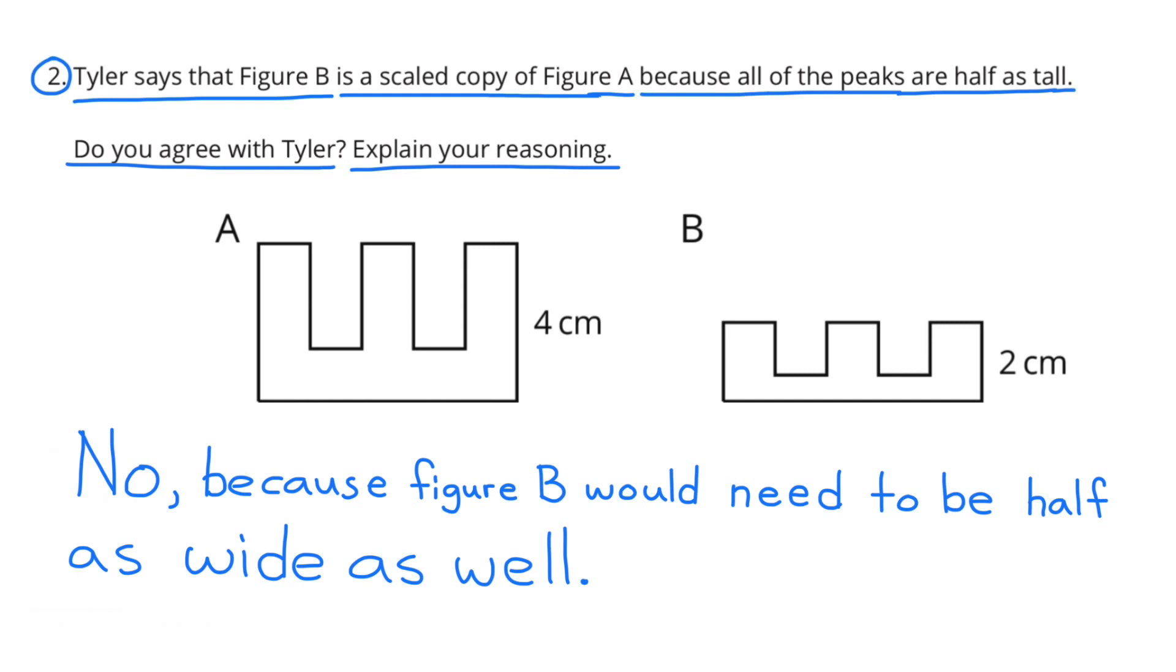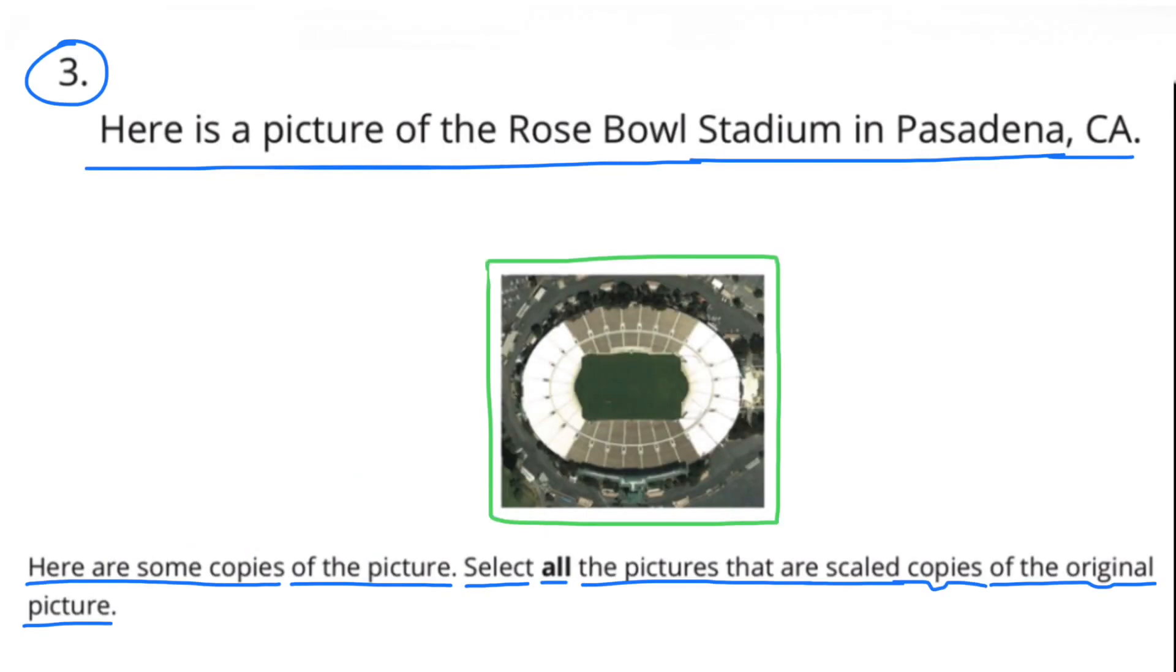Number three. Here is a picture of the Rose Bowl Stadium in Pasadena, California. Here are some copies of the picture. Select all the pictures that are scaled copies of the original picture.